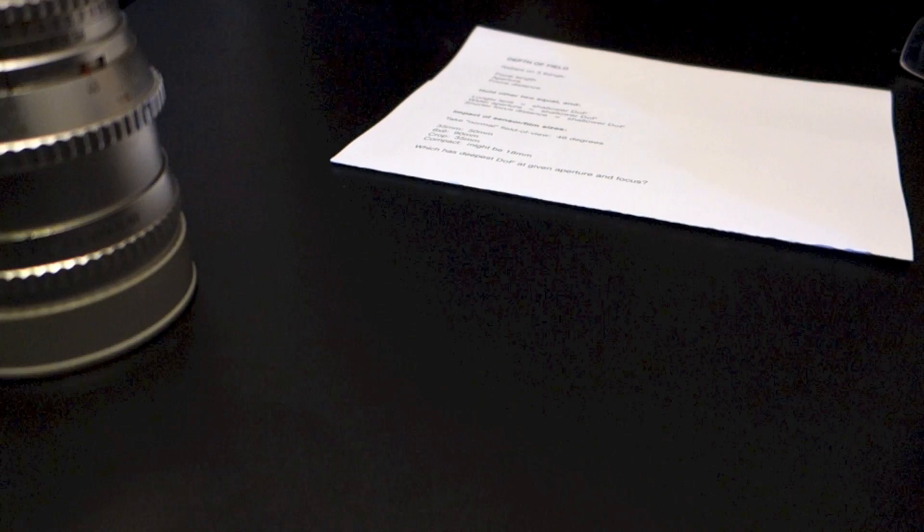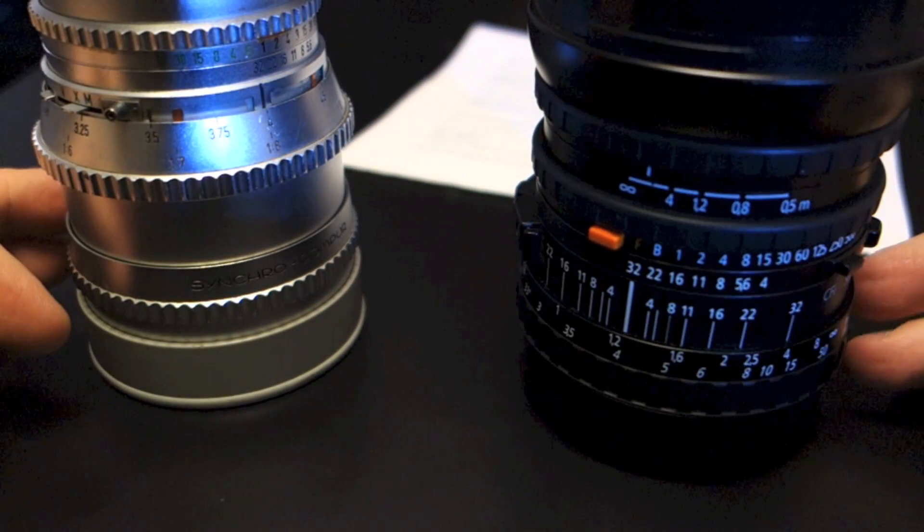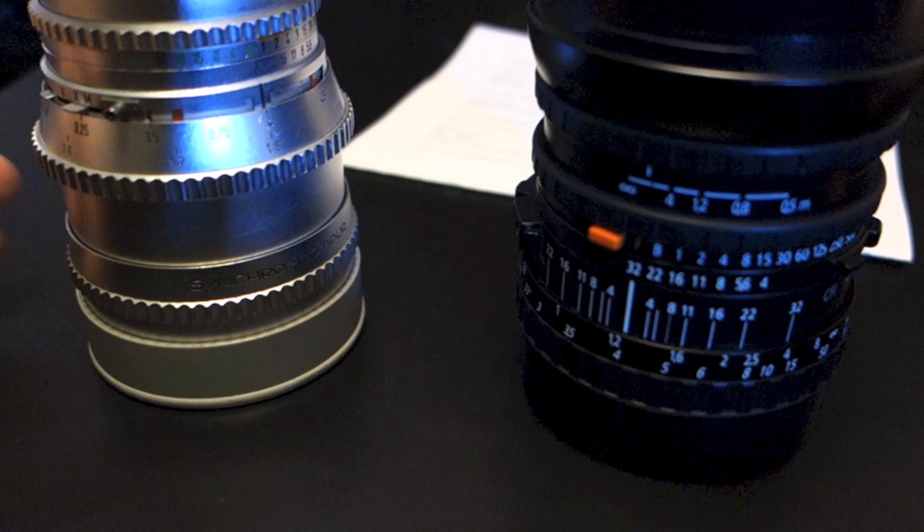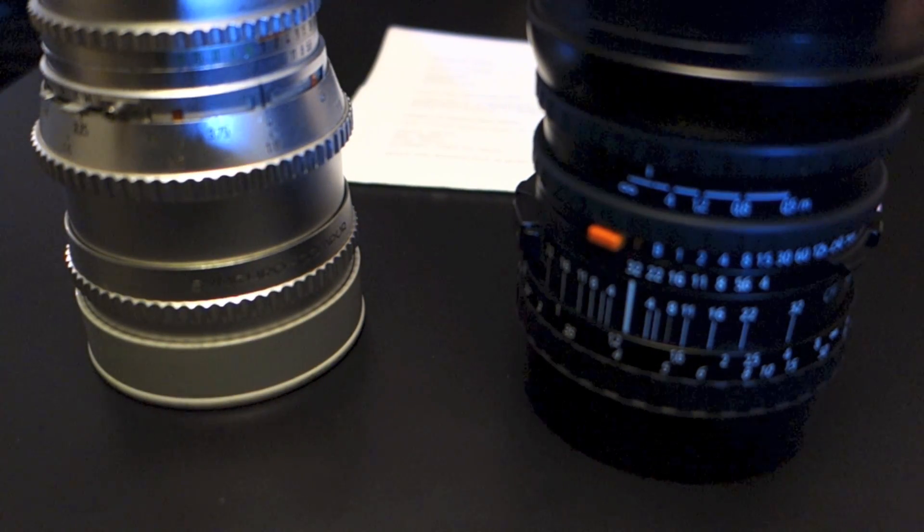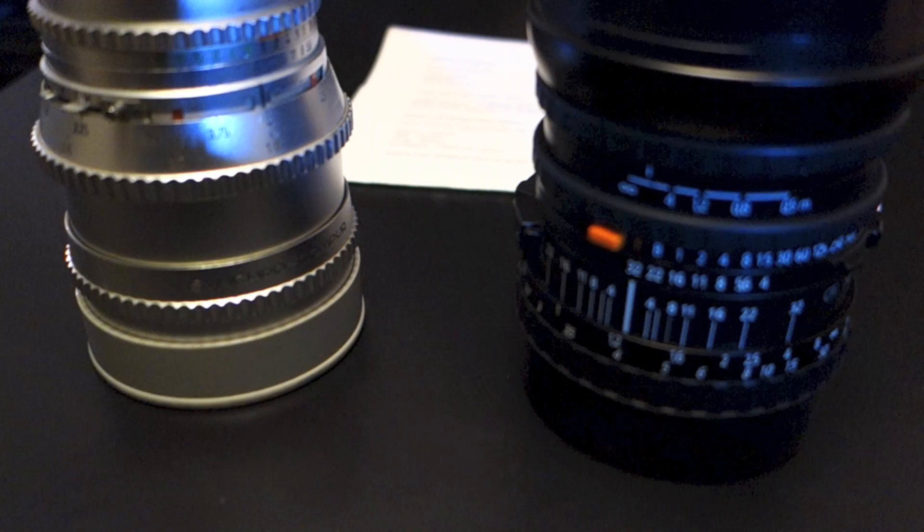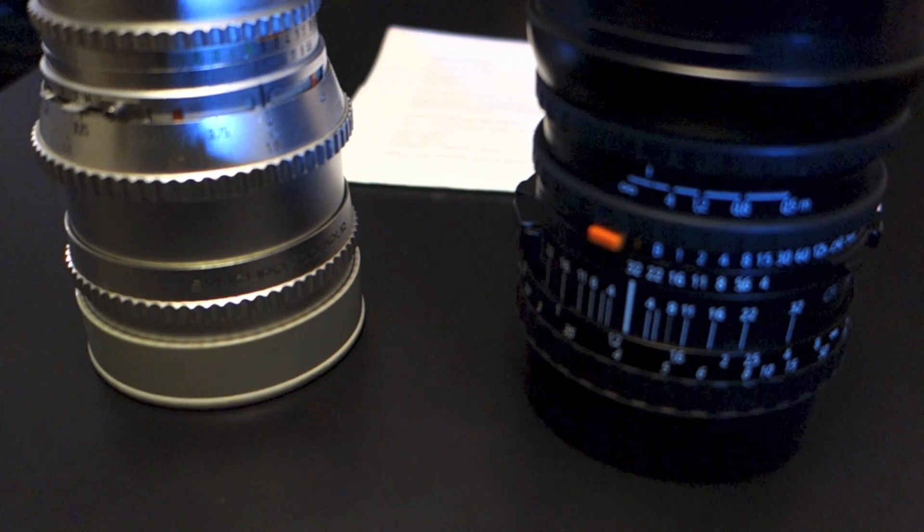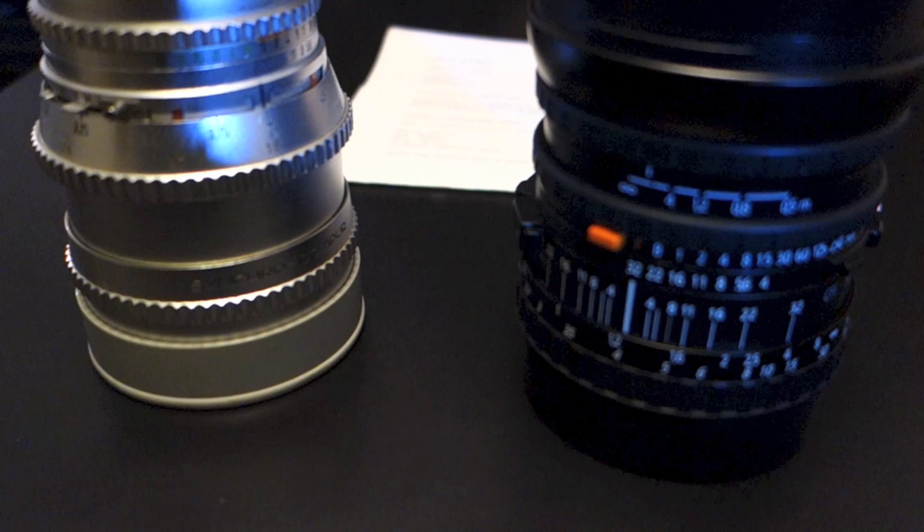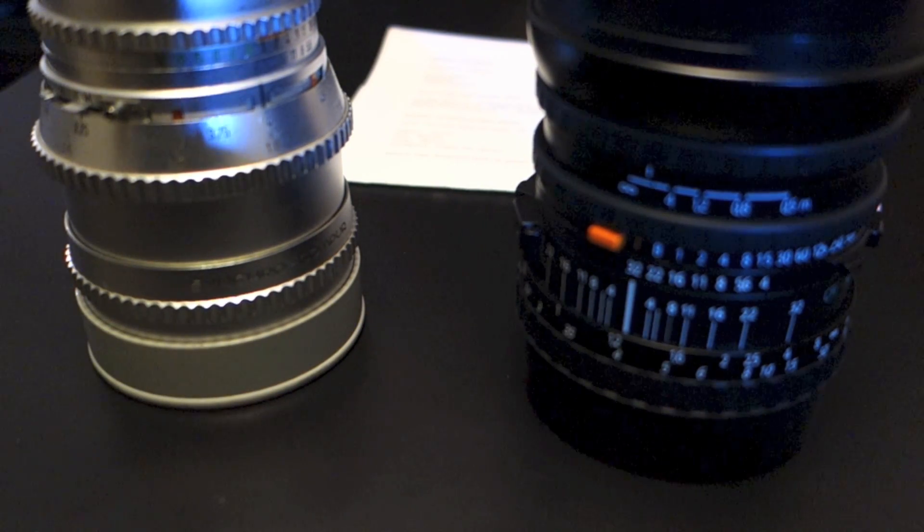So that's kind of also a demonstration of how to use your depth of field scale on lenses. So hopefully this helps you understand the relationships between focal length, aperture, distance, and sensor or film size. Thanks for watching and stay tuned for more. Talk to you later.